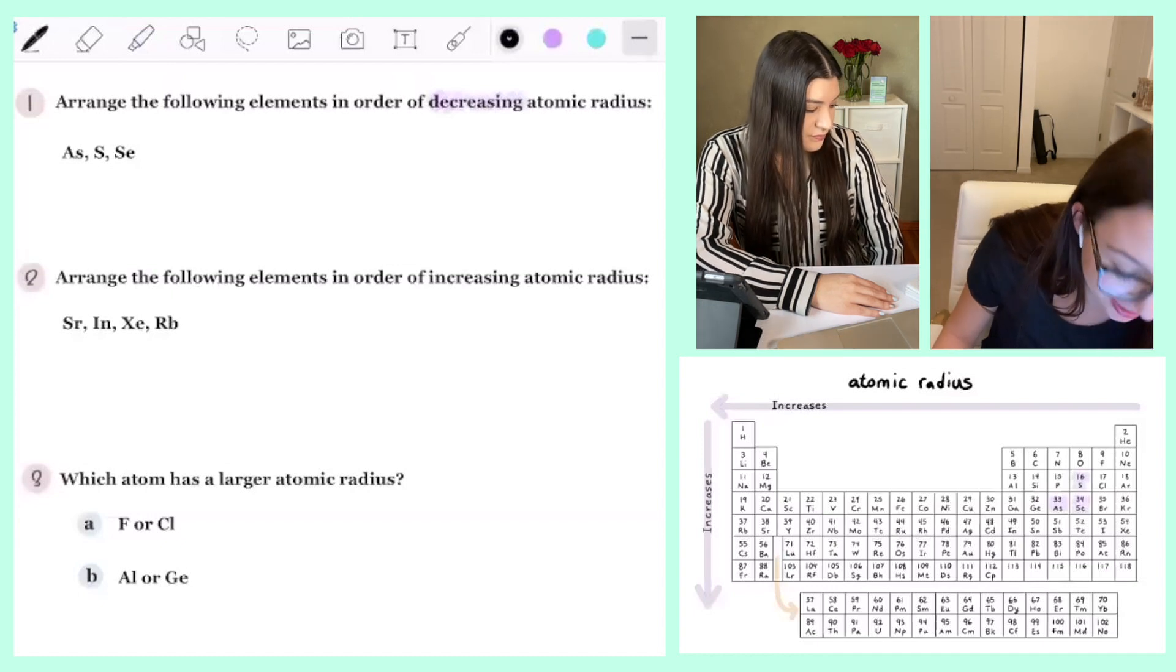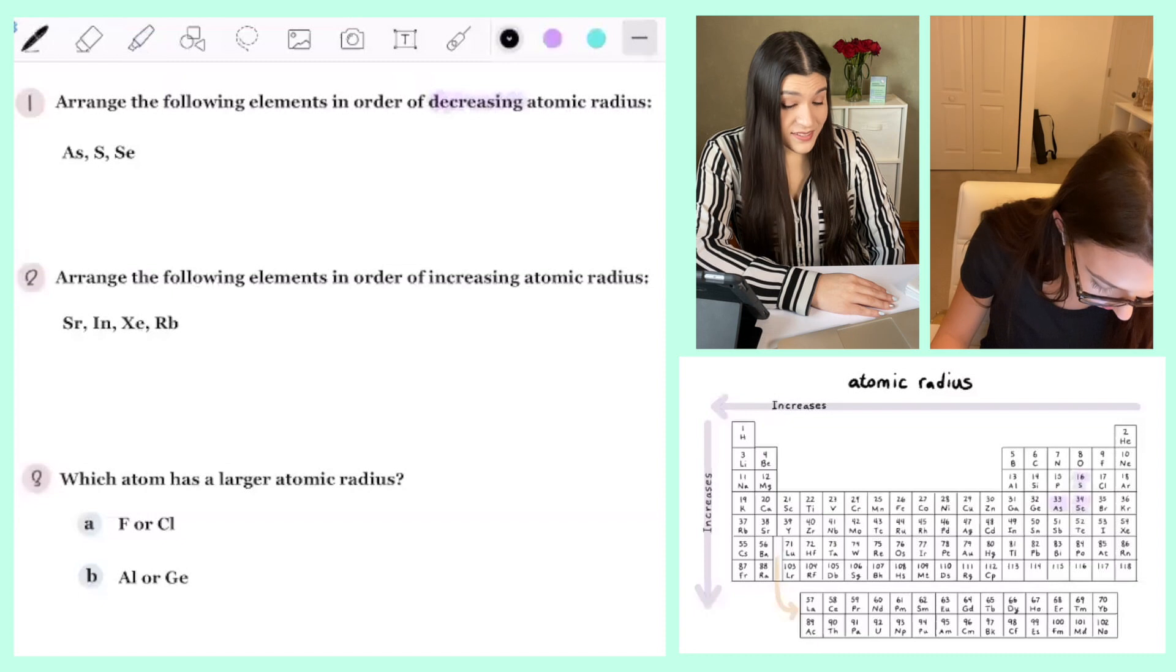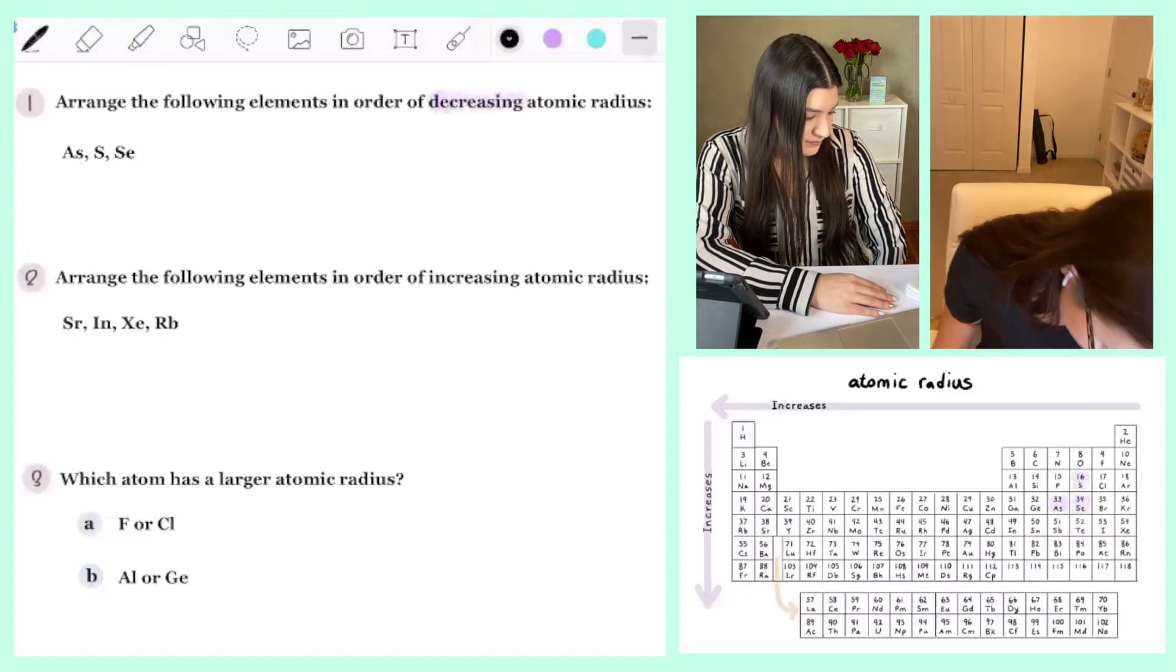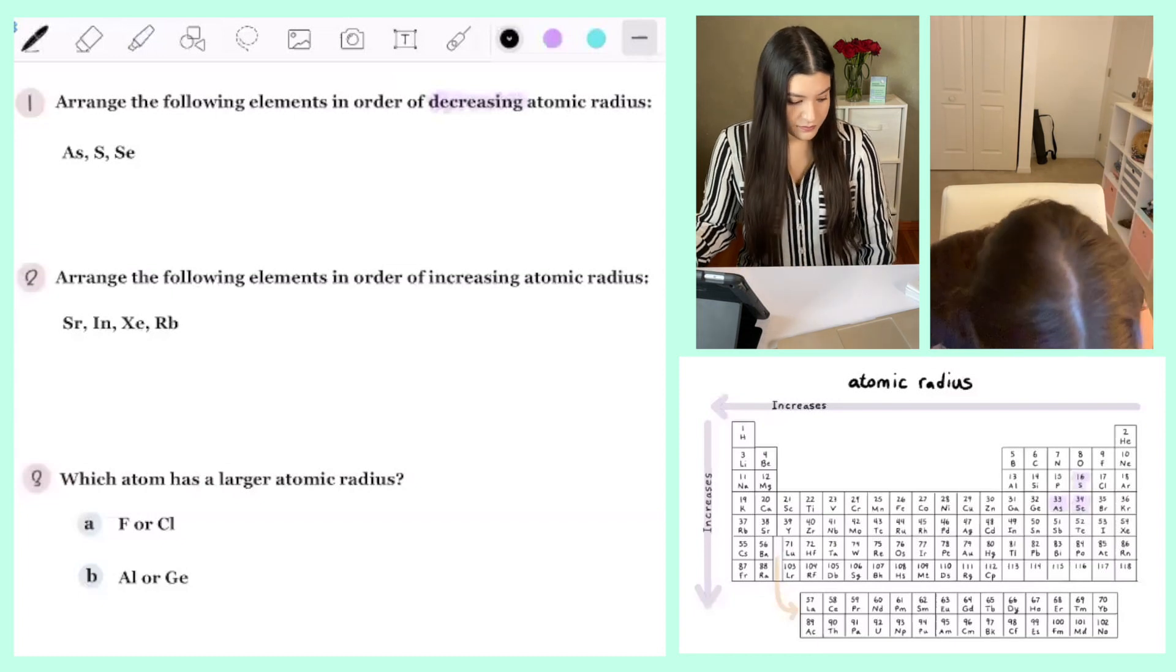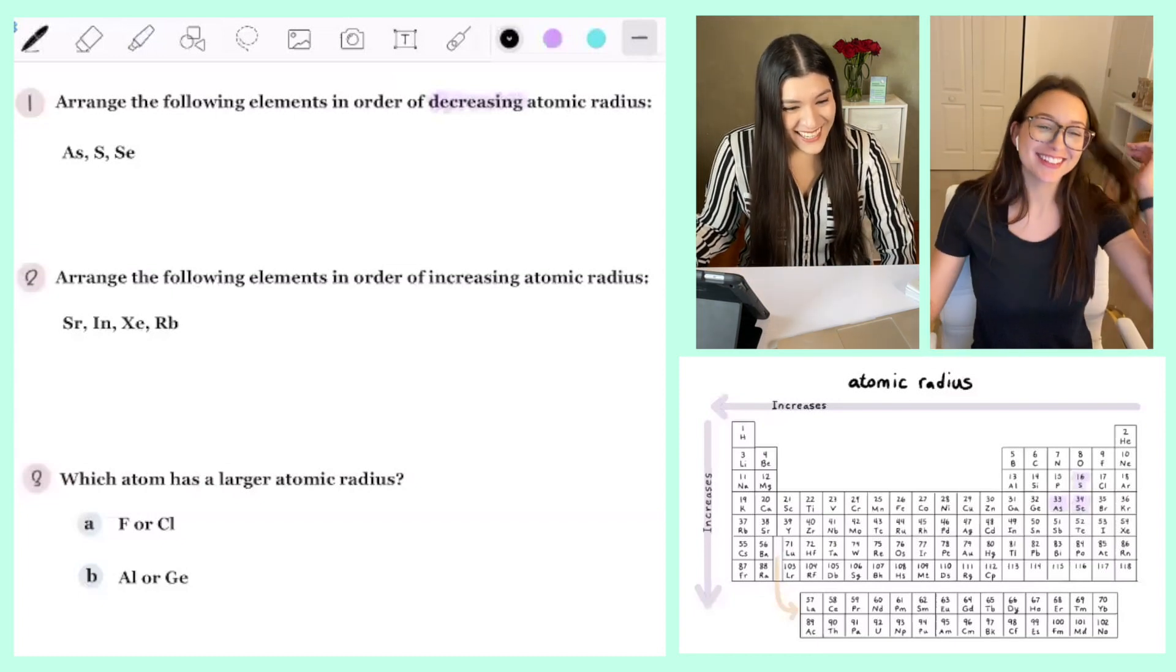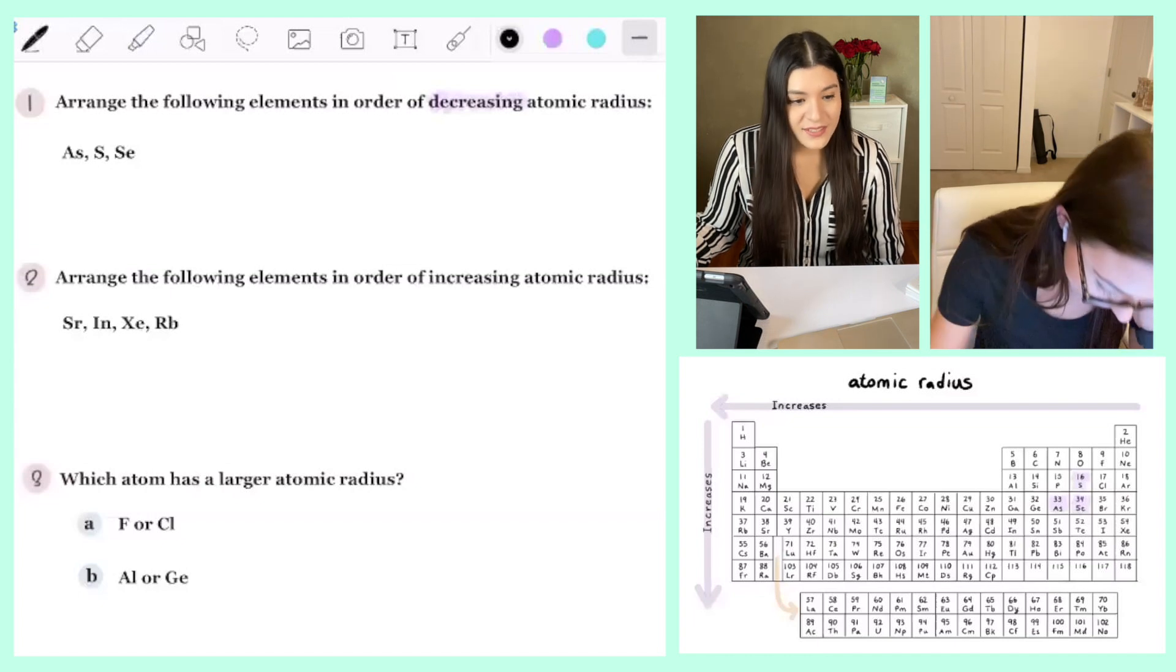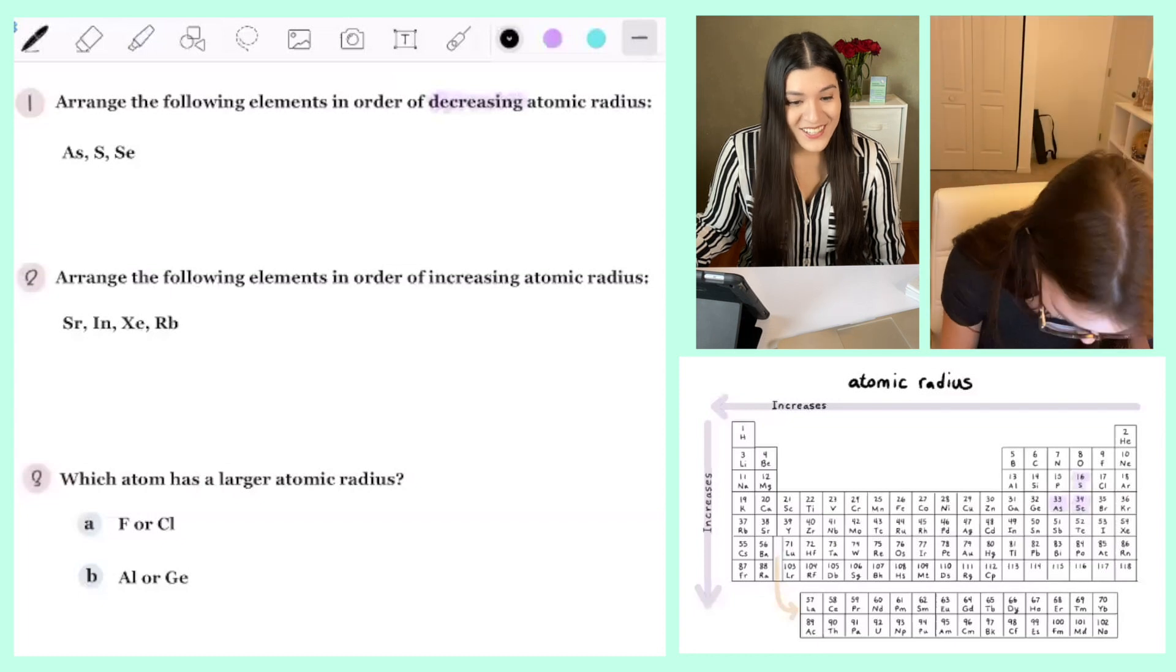So that's gonna be the opposite then? Yes. Wait, I'm confused. Decreasing is gonna be like from the largest to the smallest and this chart is showing increasing. So yeah, the opposite. Correct.